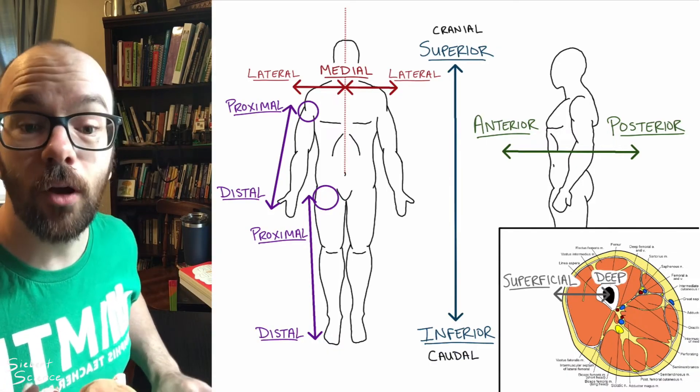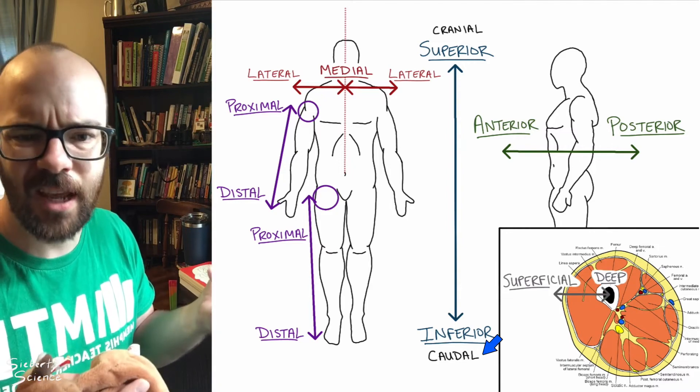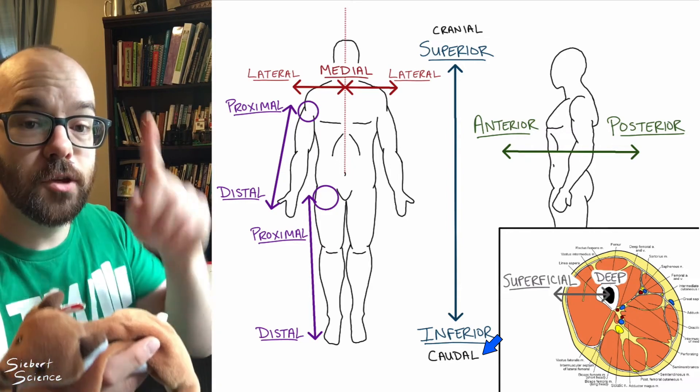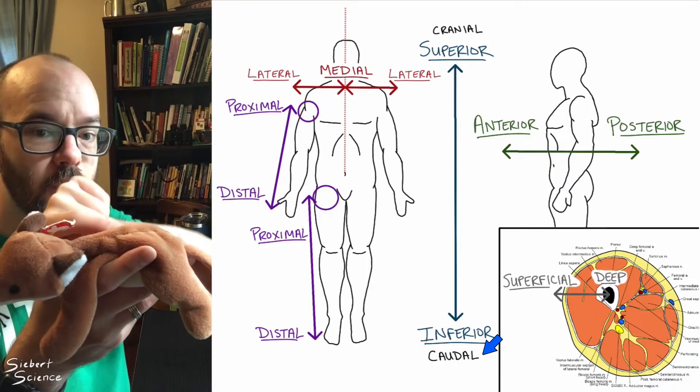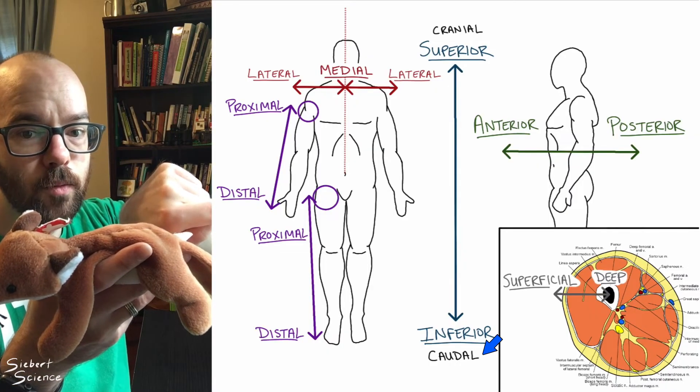Next, we have a term called caudal, which just means toward the tail or away from the head. And so for humans, caudal is downward. But for Sly, caudal would be toward the tail backward here.